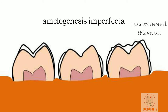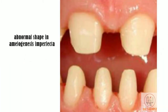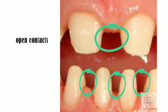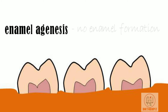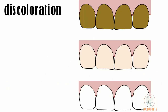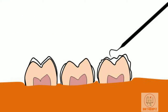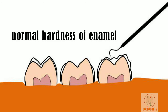In severe forms, enamel is formed of reduced thickness and causes abnormality in the shape of the crown — they may appear as if crown preparation has been done due to thinner enamel. Teeth show open contacts. In the most severe form, enamel agenesis may occur where no enamel formation is seen. Enamel appears discolored, may be white, yellow, or brown, although the hardness of enamel remains normal as calcification is normal.